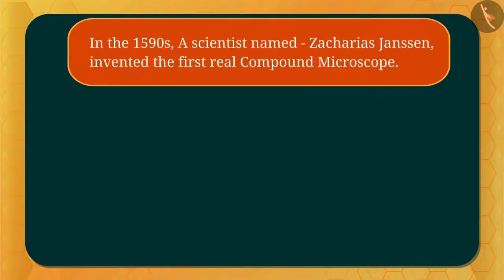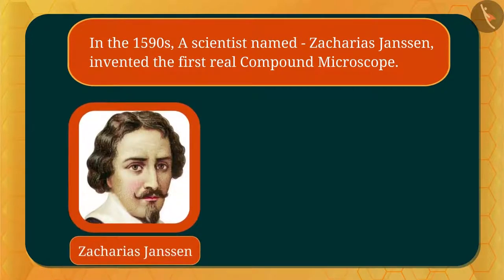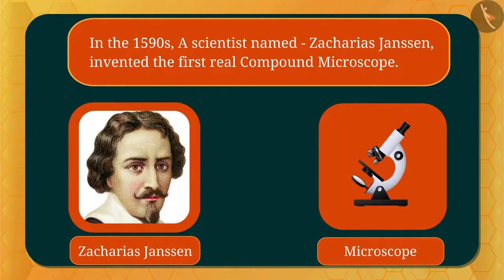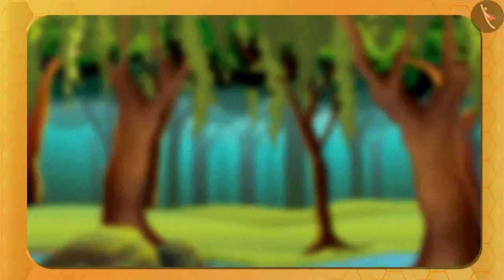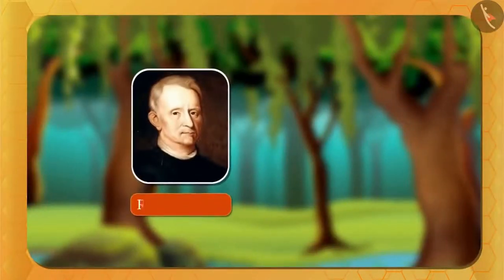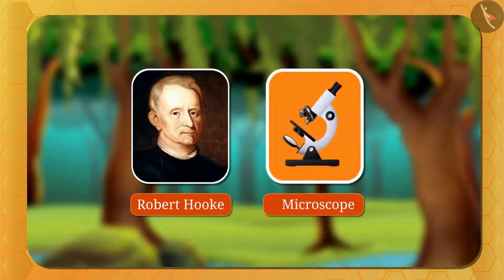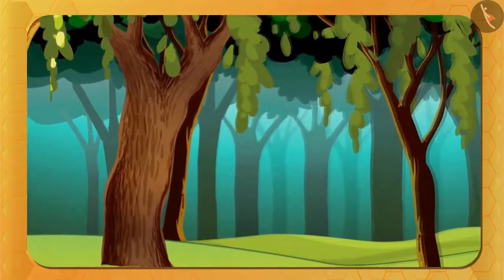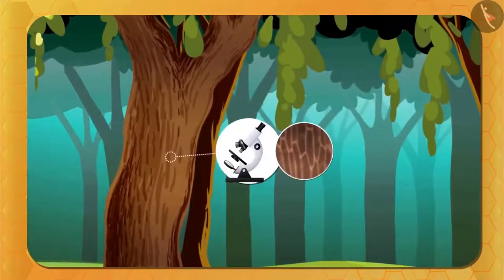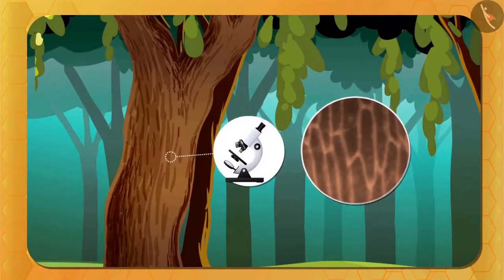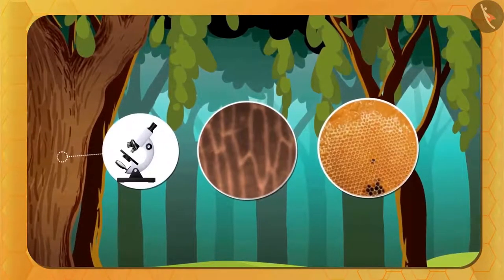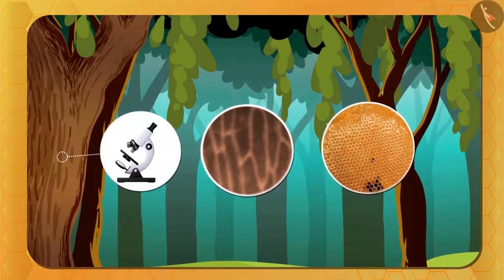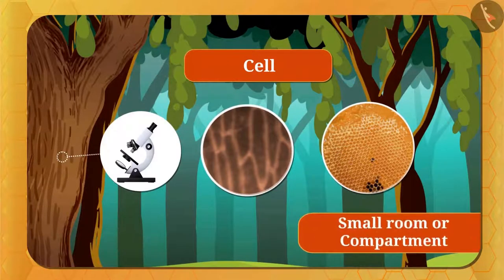In the 1590s, a scientist named Zacharias Janssen invented the first real compound microscope. Then, in 1665, a great biologist named Robert Hooke examined the bark of a tree under the compound microscope and found out that the bark had many small cells whose structure is similar to a beehive. He called these blocks a 'cell' — a Latin word meaning 'small room' or 'compartment.' In this way, Robert Hooke discovered the cell.